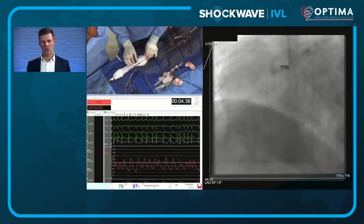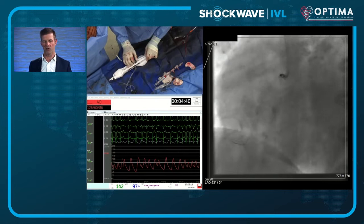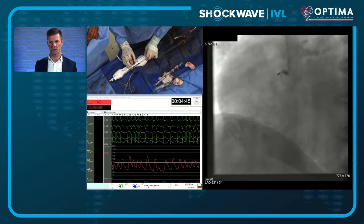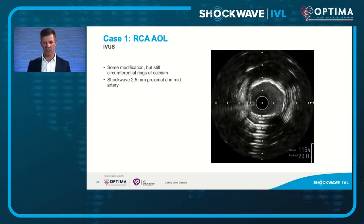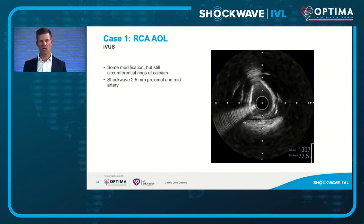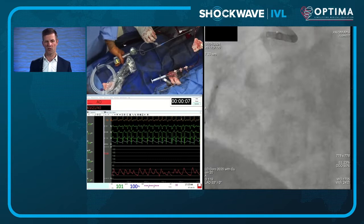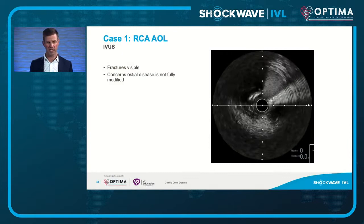After a long prolonged attempt, gently tapping away, the burr eventually passes — quite a relief. I then image to determine what further adjuncts are needed: has there been good calcium disruption for a good stent result? The answer is no — I need a shockwave balloon. I take a 2.5 millimeter shockwave and deliver 80 pulses along the length of the artery, and you can see the expansion of the balloon with delivery of the shockwave.